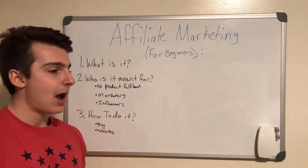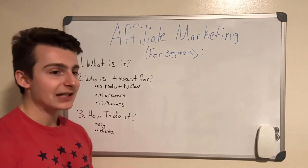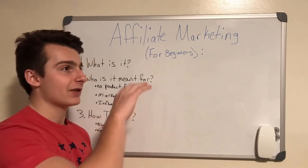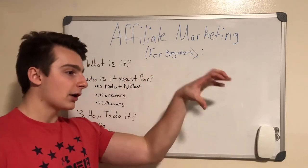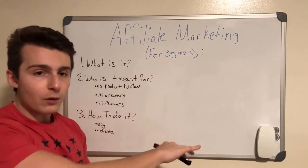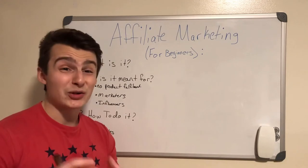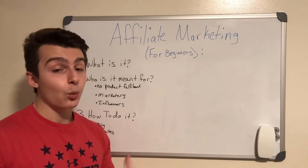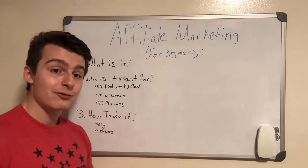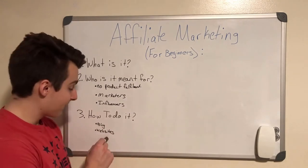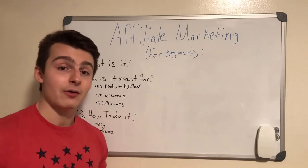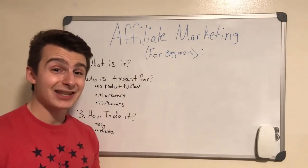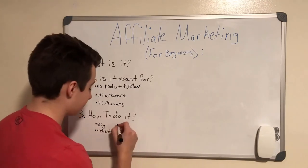Another way is websites. You can have a niche website — let's say it's all about fitness — with tons of pages on products, programs, diet plans, articles, and videos. A lot of those links could be affiliate links. As you drive traffic to your website, people will click those links, check things out, and eventually buy, and you'll make money with affiliate marketing.